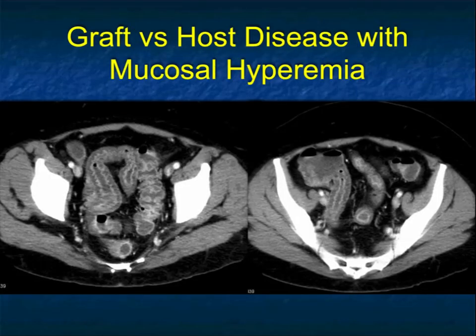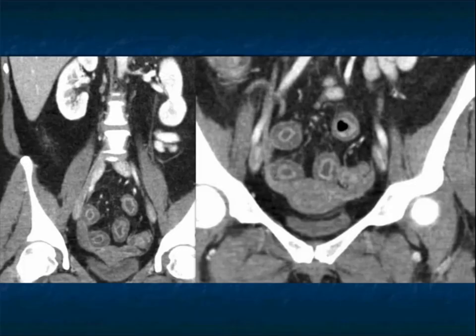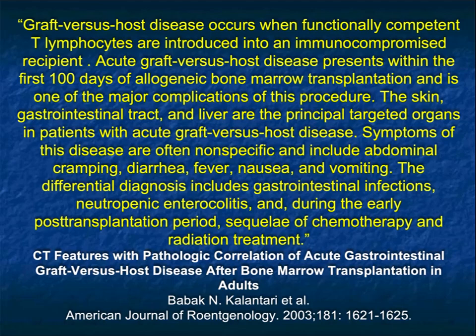Here's another case. Look at the patient's small bowel — markedly thickened, mucosal enhancement, submucosal edema, mainly involving the ileum. But you can also see that the sigmoid colon, rectum, and perhaps the cecum are involved. Here are a couple more images showing a very similar picture to the last case — graft-versus-host disease. Let me just remind you of a few things.